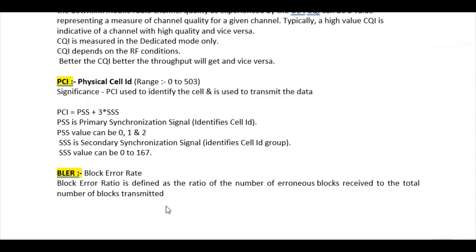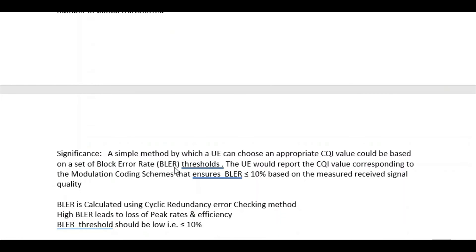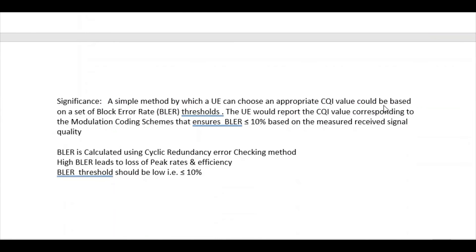The next parameter is BLER, which stands for Block Error Rate. It is defined as the ratio of the number of erroneous blocks received to the total number of blocks transmitted. A UE can choose an appropriate CQI value based on a set of block error rate thresholds. BLER should always be less than or equal to 10 percent. If it is greater than 10 percent, it means there are huge errors, which will impact CQI and consequently degrade data throughput.